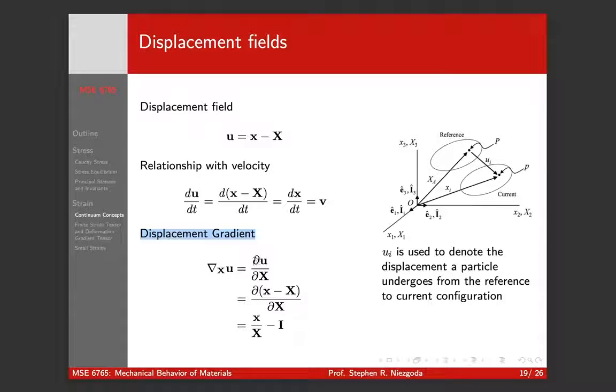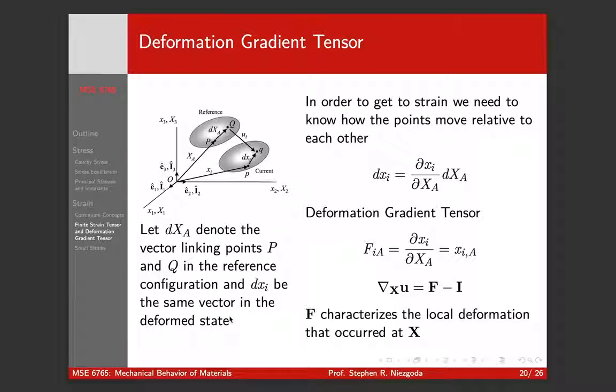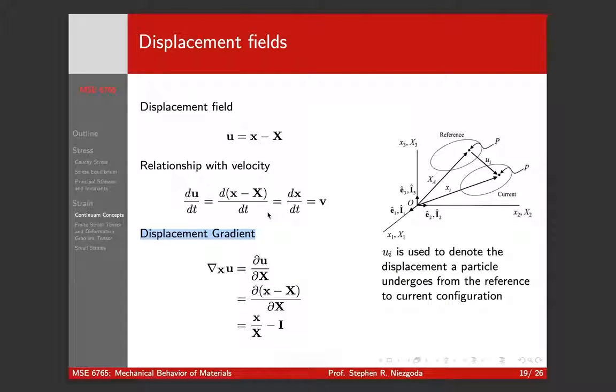So this is the derivative of displacement vector with respect to position. We can break it up this way, and this becomes the derivative of the current frame with respect to the reference, current configuration with respect to the reference minus identity. This term partial x partial X has an important name. That's the deformation gradient tensor.